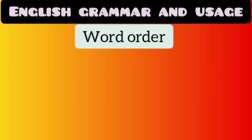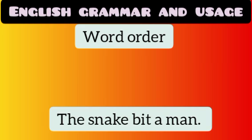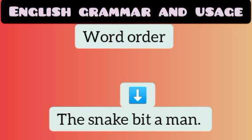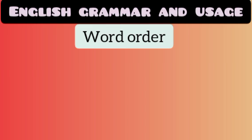Number two: the object of a sentence usually comes after the verb. For example, 'The snake bit a man.' The verb in the sentence is 'bit,' and you can easily identify the object — whom did the snake bite? The man. So the object 'the man' comes after the verb.